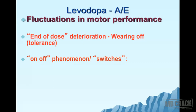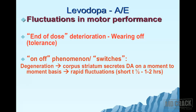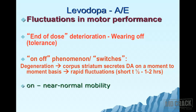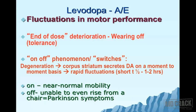As the disease progresses and degeneration worsens, the corpus striatum secretes dopamine on a moment-to-moment basis, causing rapid fluctuations in dopamine levels — the on-off phenomenon. 'On' is when dopamine levels are near normal and mobility is near normal; 'Off' is when dopamine is too low and the patient is even unable to rise from a chair.